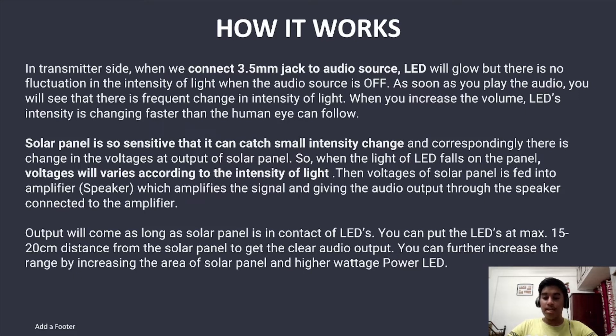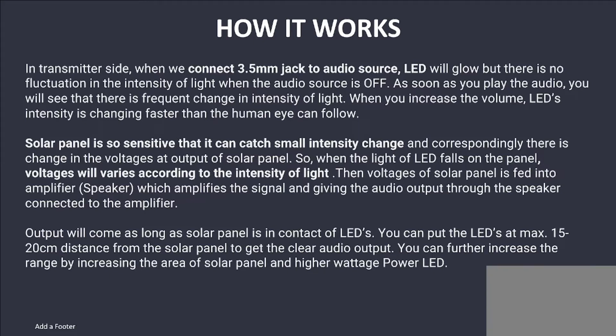Output will come as long as the solar panel is in contact with the LEDs. You can place the LED at a maximum of 15 to 20 cm distance from the solar panel to get clear audio output. You can further increase the range by increasing the area of the solar panel and using a higher wattage LED.